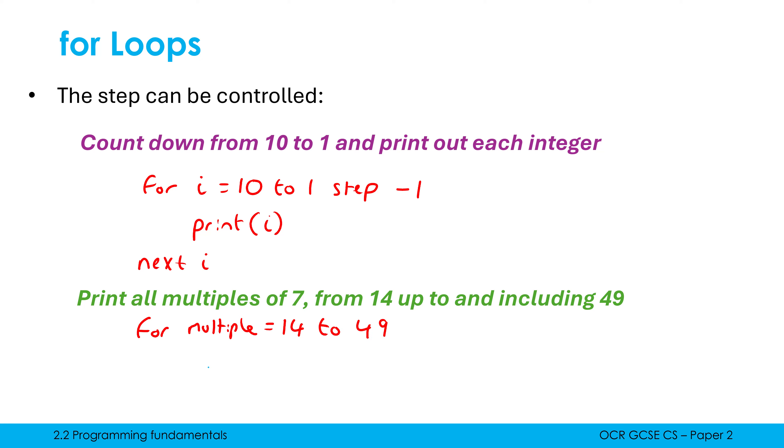I could use an if statement with mod maybe in my for loop, but a simple way of doing this question would just be to set the step to be seven. So that each time I add seven and simply just print out multiple each time round.